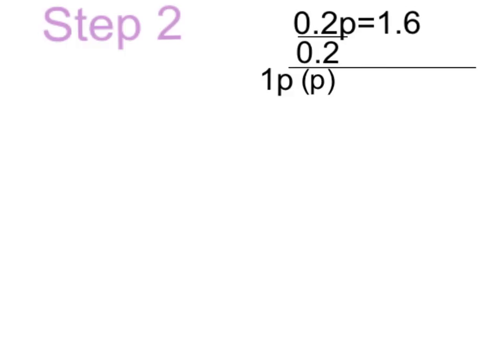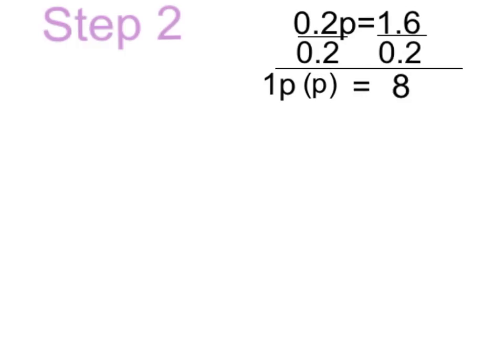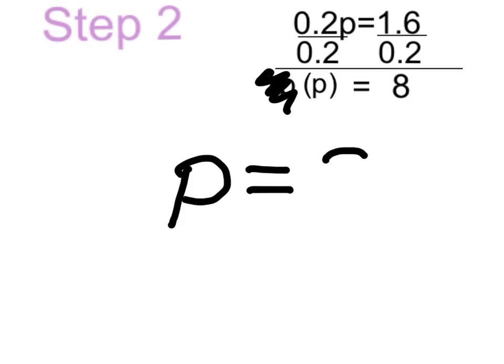Now we've finally isolated the variable. You just get 1p, or just p, because multiplying a number by 1 is just the number itself. Like we said in the last step, what you do to one side of the equal sign you ultimately have to do to the other. So if I divide 1 and 6 tenths by 2 tenths, it's going to look something like this. We've finally got our equation down to p equals 8.